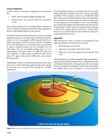Terrain selection: A pilot's choice of emergency landing sites is governed by the route selected during preflight planning and height above the ground when the emergency occurs. The only time the pilot has a very limited choice is during low and slow flight or during takeoff. The amount of area for available landing sites increases rapidly with increased altitude. A WSC aircraft with a 5-to-1 glide ratio flying at 500 feet AGL has a 2,500-foot radius on the ground to select a suitable landing area — approximately 0.8 square miles. At 1,000 feet AGL, this area would be 3.1 square miles; at 2,000 feet AGL, about 12.5 square miles; and at 5,000 feet AGL, almost 80 square miles. Flying downwind provides more area to cover while looking for a suitable landing area.